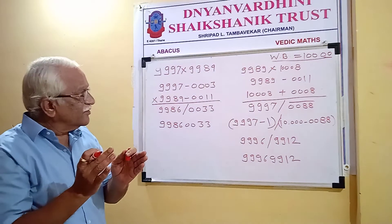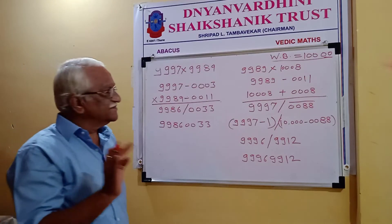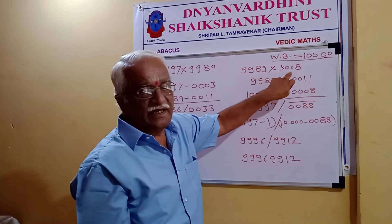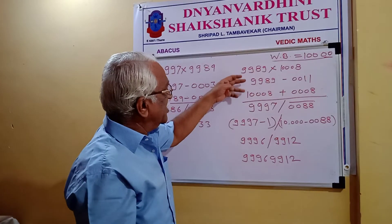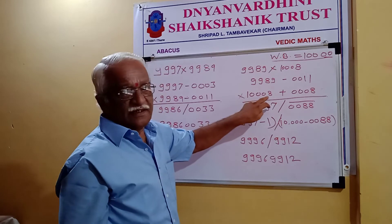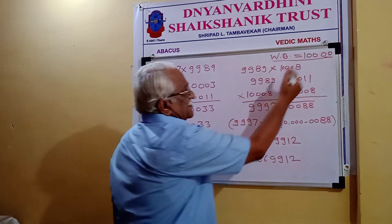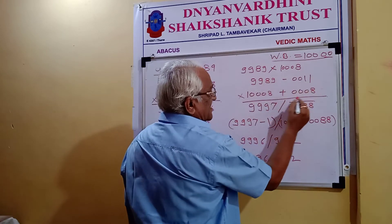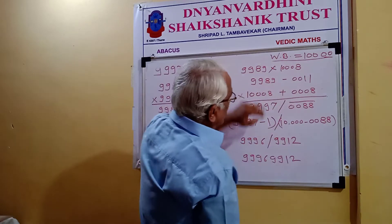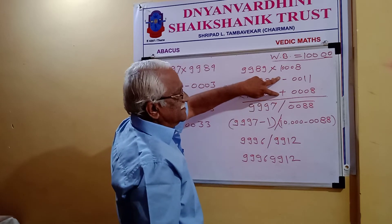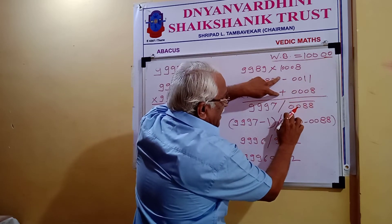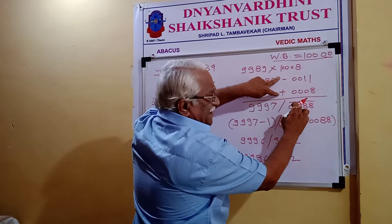Now you are experiencing the magic of maths. Here we are multiplying 9,989 into 10,008. The difference between these two figures and the base is 11 and 8. This one is bigger so we write minus; this one is smaller so we write plus. Multiplying: 11 into 8 is 88. But we have to write 4 digits, so 0088. It is minus, because minus times plus gives minus — so we write a bar over it.